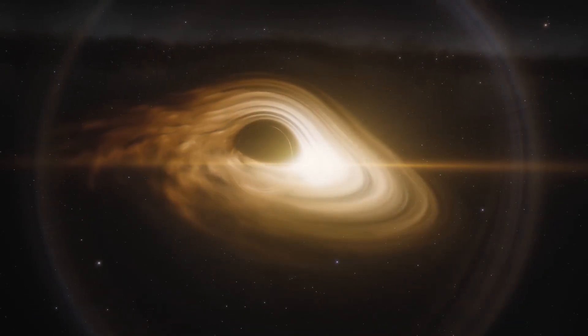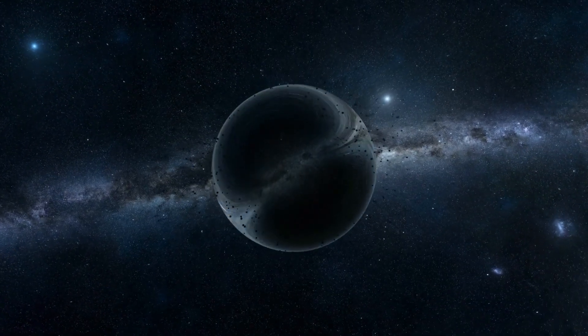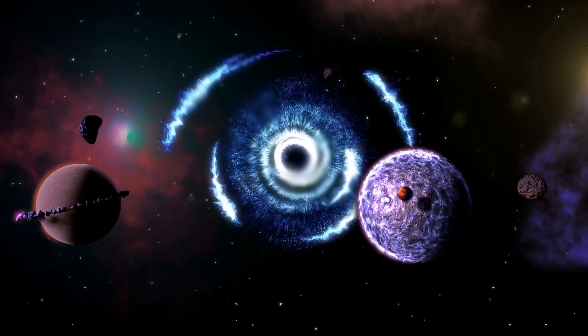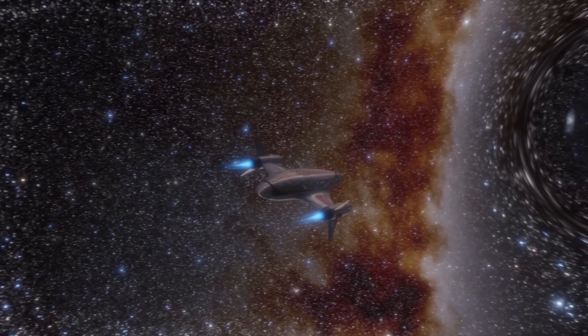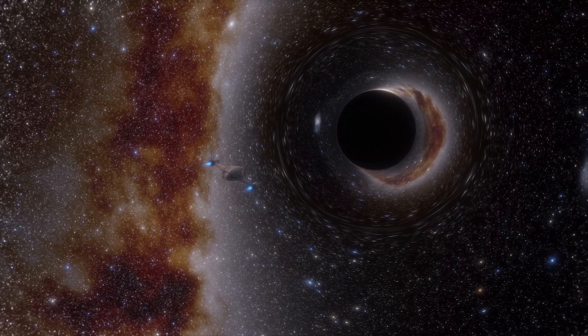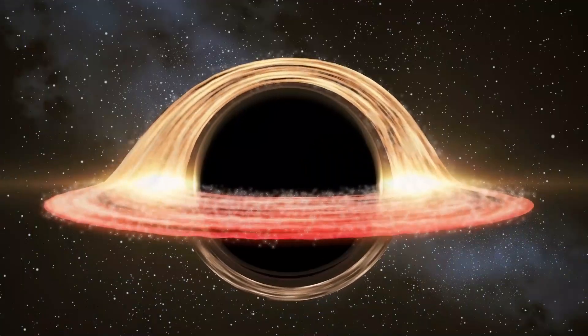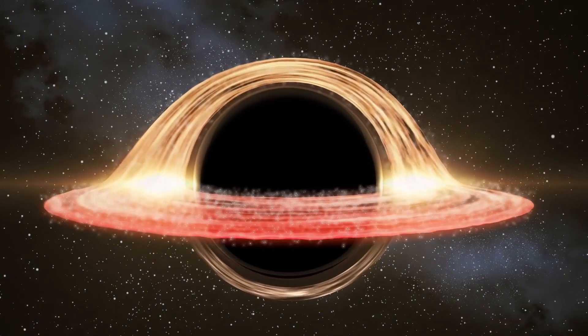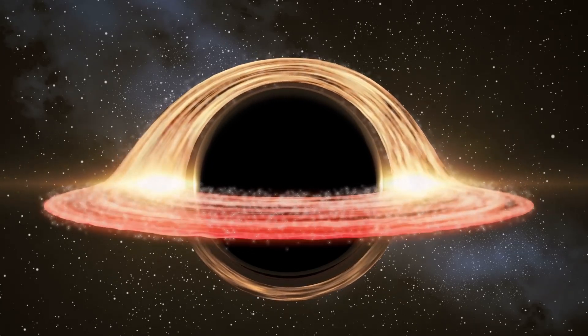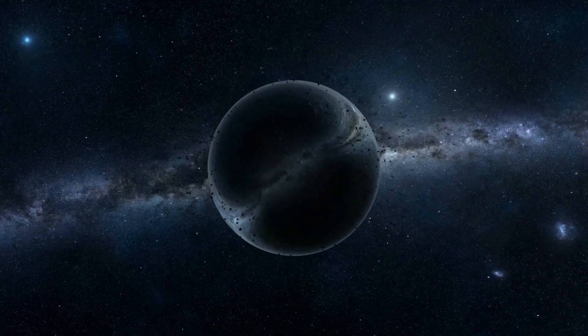However, if a stable Einstein-Rosen bridge existed, it would mean that black holes are not only cosmic devourers, but also portals that could connect us to other regions of space-time. The question then arises whether we could use a wormhole to travel through space and time. Although this is still the subject of speculation and its feasibility has not yet been demonstrated, the theoretical possibility of wormholes opens the door to exploring fascinating concepts about interstellar travel and the connection between different parts of the universe.